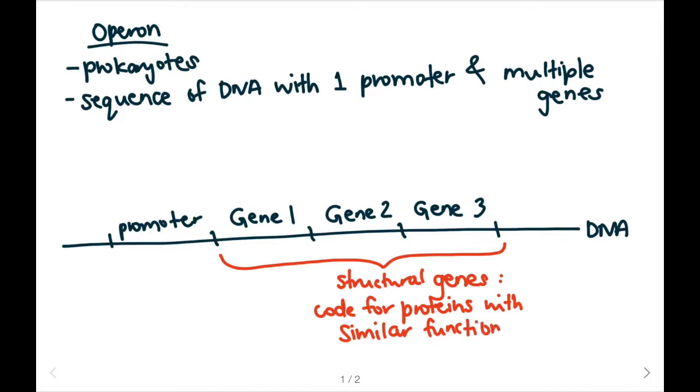And so this allows for efficiency in our body because it means that RNA polymerase has to bind to one promoter only in order to transcribe all three genes at once.